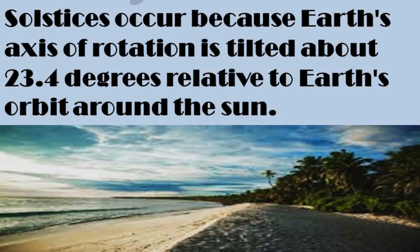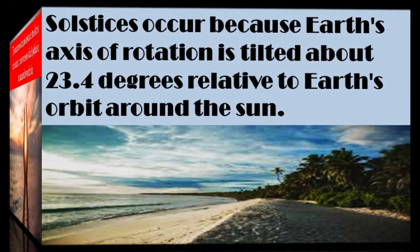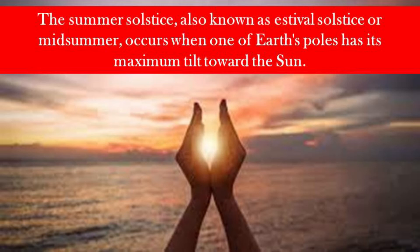The word 'solstice' comes from Latin: 'sol' meaning sun and 'stitium' meaning still or stop. Due to Earth's tilted axis, the sun doesn't rise and set at the same locations on the horizon each morning and evening — its positions move northward or southward as Earth travels around the sun. The June solstice is significant because the sun reaches its northernmost point in the sky, at which point the sun's path does not change for a brief period of time.